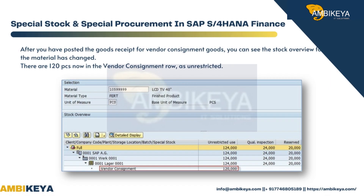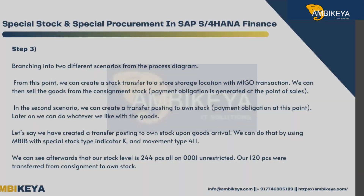After you have posted the goods receipt for vendor consignment goods, you can see the stock overview for the material has changed. There are now 120 pieces in the vendor consignment row as unrestricted stock.